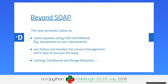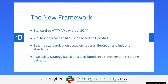These new semantics allow us to route requests based on path and method. We don't necessarily have to process message bodies to know how to balance them — whether they are idempotent or non-idempotent, read-only or read-write, or whether to cache or not. I can use status codes and headers, which is a way of reading the payload without actually reading the whole body. I can also leverage rich semantics for caching, conditional requests, and even range requests.